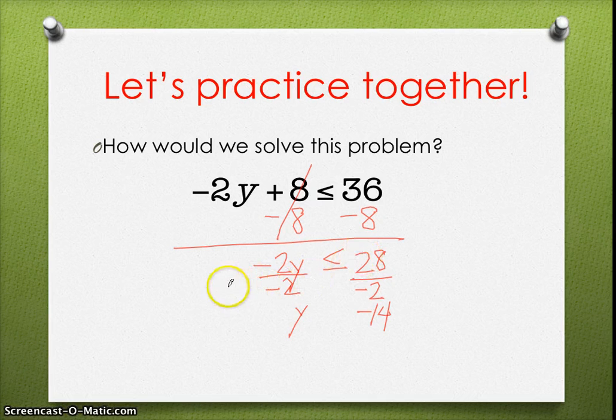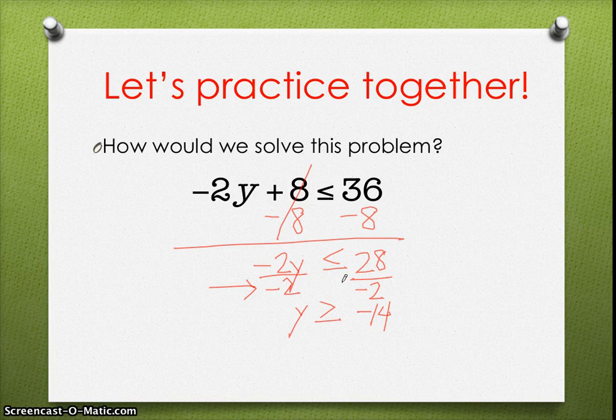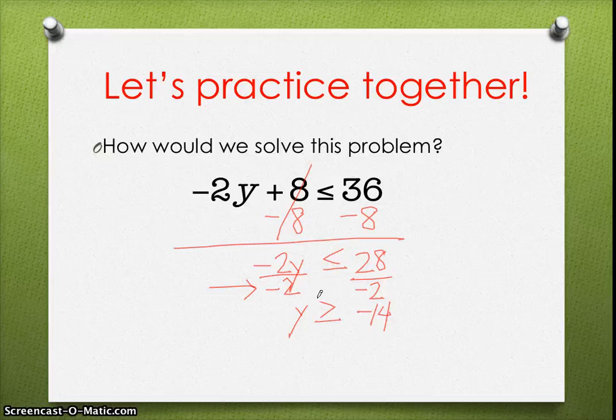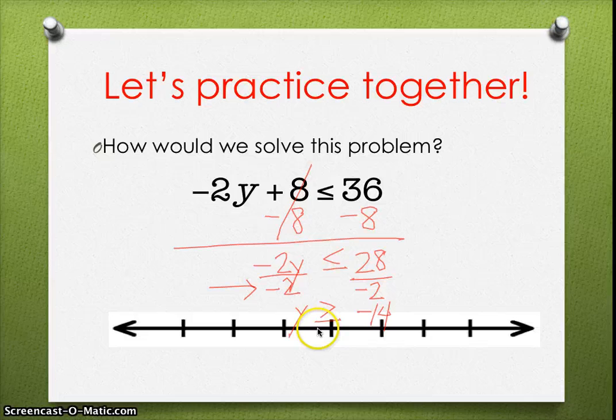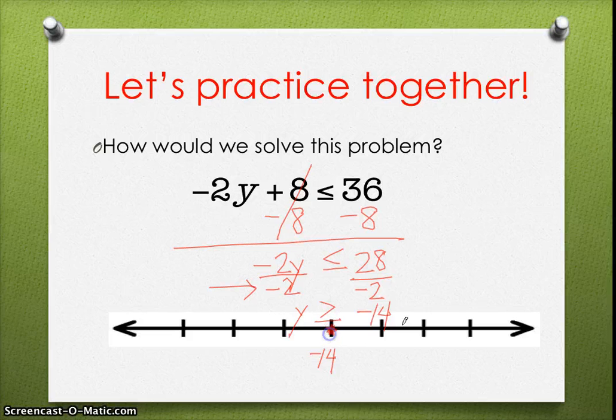But I want you to pay close attention that I am dividing by a negative. And we know that dividing or multiplying by a negative changes the direction of the sign. So it's no longer less than or equal to. It's greater than or equal to. So once we've decided that, it's really important that we switch the direction of the sign. Because that will change what our graphing is going to look like. So let's take a look at our number line. We have negative 14 on our number line. Since it's inclusive, we want to draw that dot, a closed circle. And it's greater than, so we move to the right.